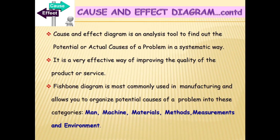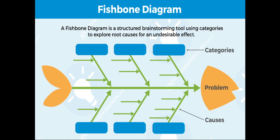Now let's see what a cause and effect diagram actually is. It is an analysis tool to find out the potential or actual causes of a problem in a systematic and organized way. It is a very effective tool for improving the quality of a product or service. The fishbone diagram is most commonly used in manufacturing and allows you to organize potential major or minor causes of a problem against the categories: Man, Machine, Material, Methods, Measurements, and Environment. This is a structured brainstorming tool using categories to explore the root causes for an undesired effect, i.e., a problem.